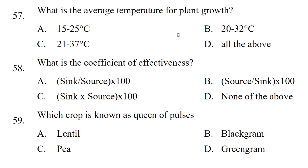What is the average temperature for plant growth? The options are 15 to 25 degree Celsius, 20 to 32 degree Celsius, 21 to 37 degree Celsius, or all of the above. The correct answer is 21 to 37 degree Celsius. What is the coefficient of effectiveness? Sink by source into 100, source by sink into 100, sink into source into 100, or none of the above? The correct answer is sink by source into 100.